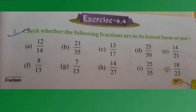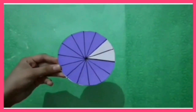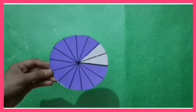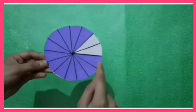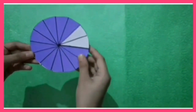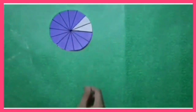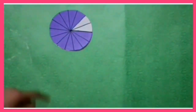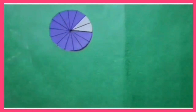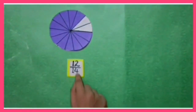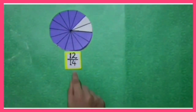First of all, let us solve part A of question number 1. Here I have a circle which is divided into 14 equal parts. Now tell me, what is the fraction of the colored part? Yes, very good — 12 upon 14.